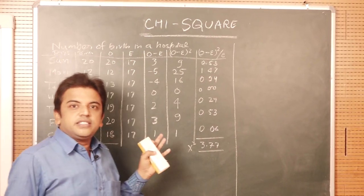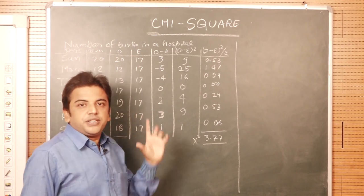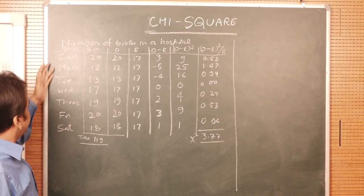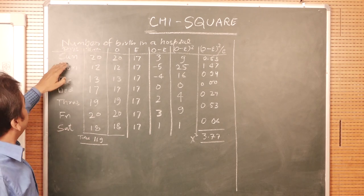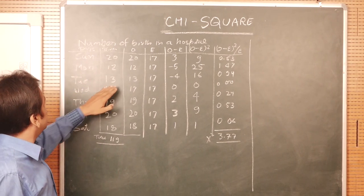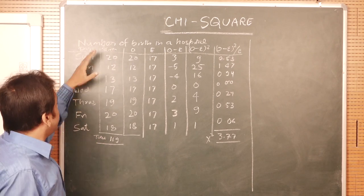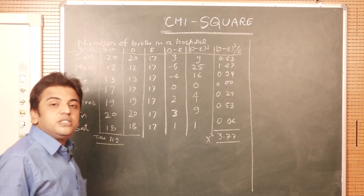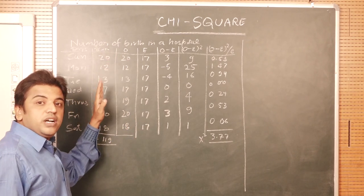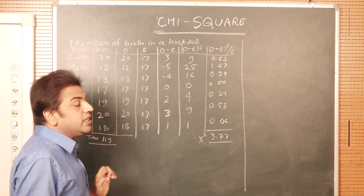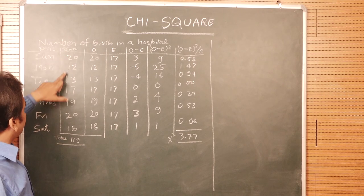Let us take an example. There are a number of births in a hospital in a week — that is 7 days — and we are counting how many babies are born each day. On Sunday 20 babies, Monday 12, Tuesday 13, Wednesday 17, Thursday 19, Friday 20, and Saturday 18 — meaning in a week there are 119 babies born in the hospital. Here the observed value is being given.